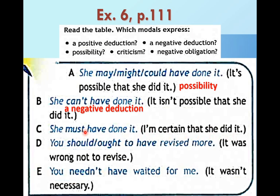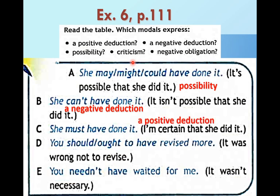She must have done it — I'm certain that she did it. Глагол must — это не только про правило. Еще одно значение — когда мы в чём-то уверены практически на сто процентов, certainty. Мы знаем предысторию, нюанс, который вселяет уверенность. She must have done it — она сто процентов это сделала. So it's a positive deduction.